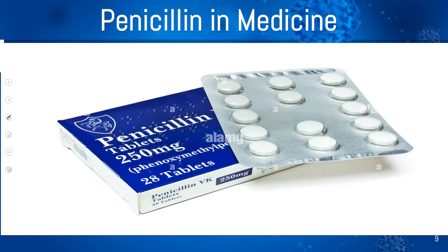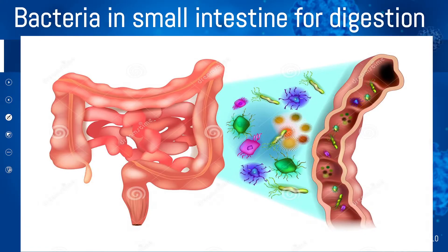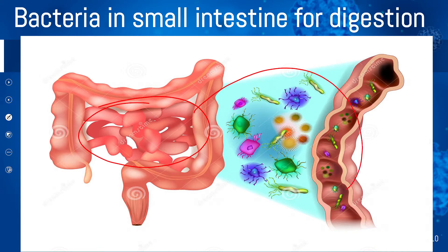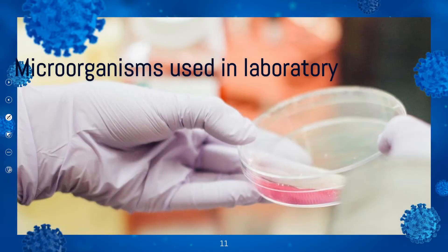We get penicillin from the Penicillium fungi, and it is used in medicines. Then, bacteria in the small intestine help in digestion. Microorganisms are also used in laboratories for the study of different treatments and to treat different diseases.